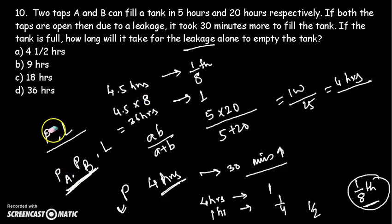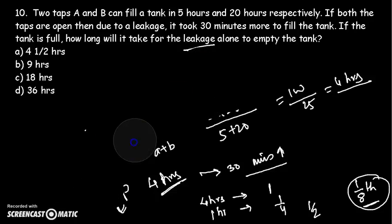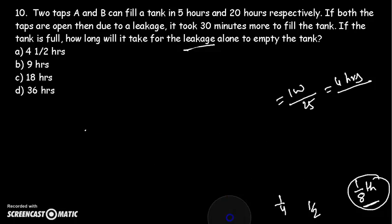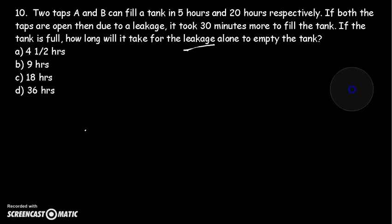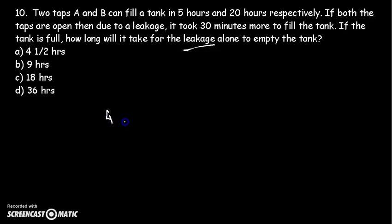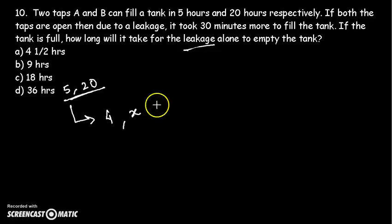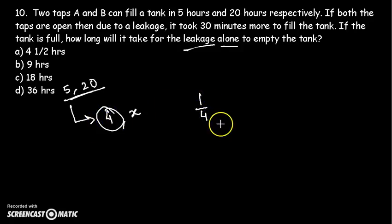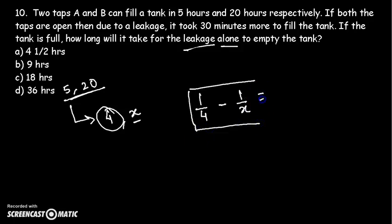If you find that method difficult, you can instead let X be the time the leakage alone takes to empty the tank. In 1 hour, the pump does 1/4 of the tank and the leakage does negative 1/X. So the net work per hour is 1/4 minus 1/X. Since when both pump and leakage are working it takes 4.5 hours to fill the tank, in 1 hour the net work is 1/4.5 = 2/9.